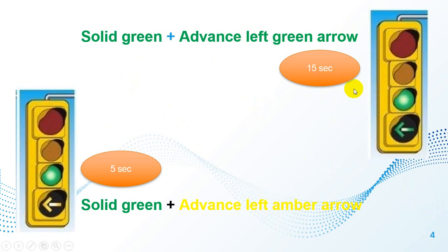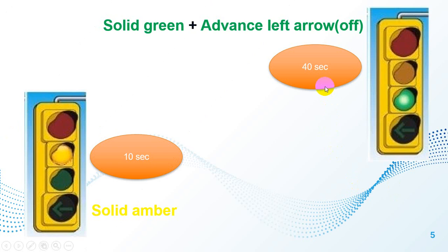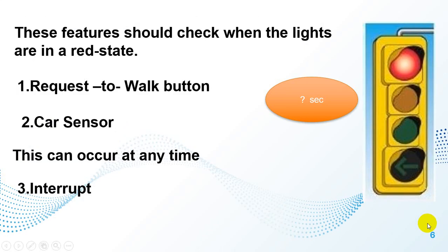For example, in the first state the timer should be 50 seconds, and the other one 5 seconds. And also for the third state, 40 seconds for the yellow and for the solid amber 10 seconds. And at the end, for the last state when we have a red light, we have two conditions.